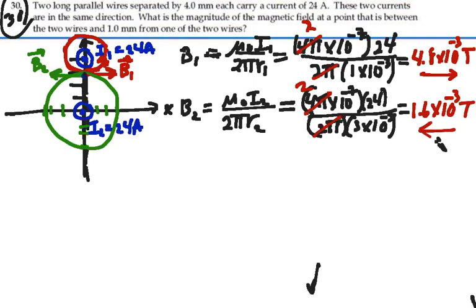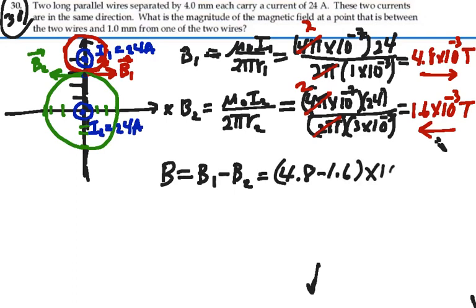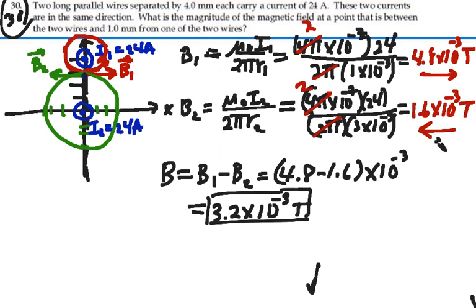So B2 is smaller than B1, so our net field at that point is actually going to be in magnitude of B1 minus B2, so that's going to be 4.8 minus 1.6, all that times 10 to the minus 3, and so that's going to be 3.2 times 10 to the minus 3 Tesla. And since it's the bigger one minus the smaller one, that's going to be in the direction of the bigger one, so that is actually going to be to the right as I've drawn it. So that will be our net magnetic field, 3.2 times 10 to the minus 3 Tesla to the right if I have both of these currents coming out of the page.